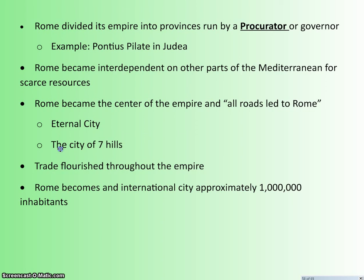Trade flourishes throughout the empire. The Mediterranean has really turned into a Roman lake because the Romans control the entire surrounding region and all the trade, and their navy keeps the peace. Everything goes well, especially during what they call the period of the five good emperors. The last of these is Marcus Aurelius — the emperor killed at the very beginning of the movie Gladiator. Rome becomes an international city with people from all over the world living there, over a million inhabitants, which is huge by ancient standards — the largest city in the world based on archaeological evidence.